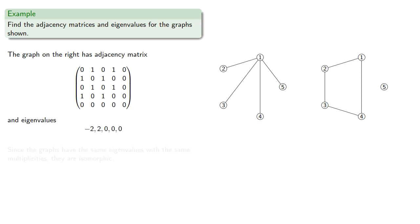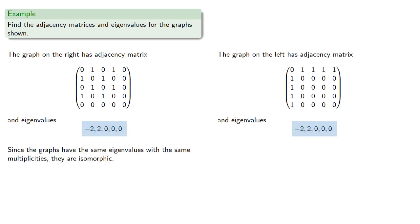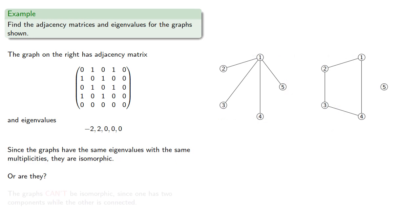And since the graphs have the same eigenvalues with the same multiplicities, they are isomorphic. Or are they? The graphs can't be isomorphic since one has two components while the other is connected.